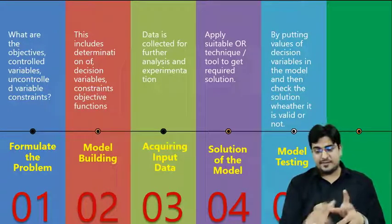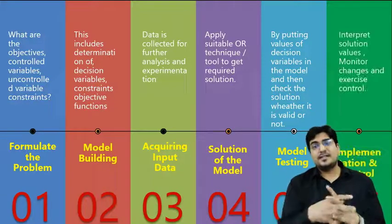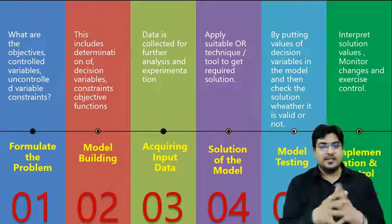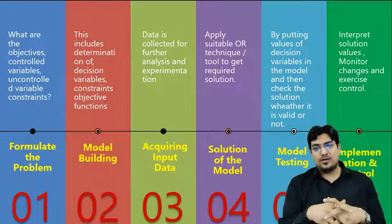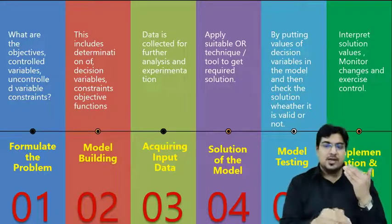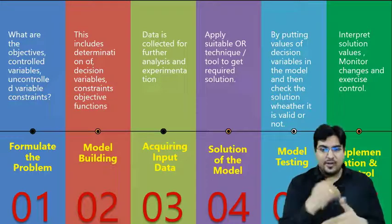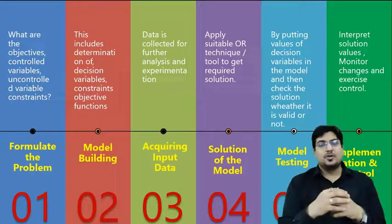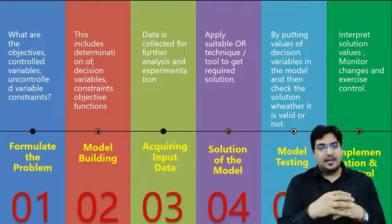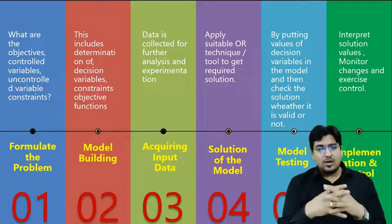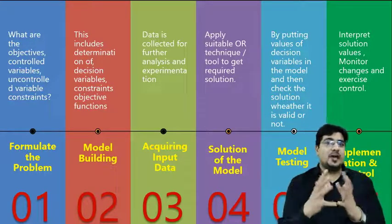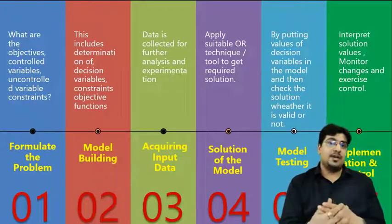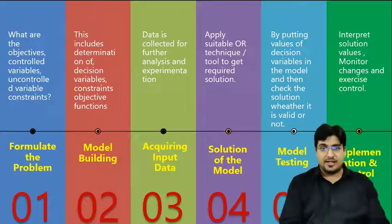Phase six is implementation and control. After completing all five phases and obtaining a solution, you manage, control, and implement the model for the particular problem. These are the six phases we apply when solving a problem using Operation Research techniques.